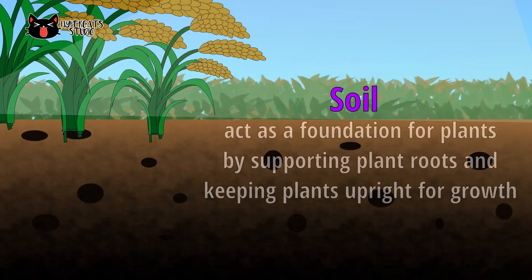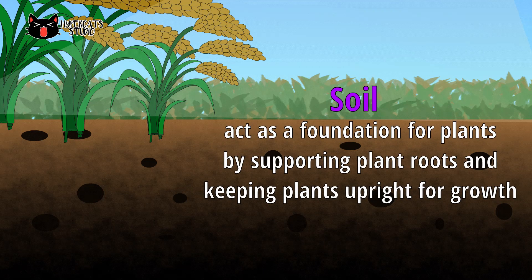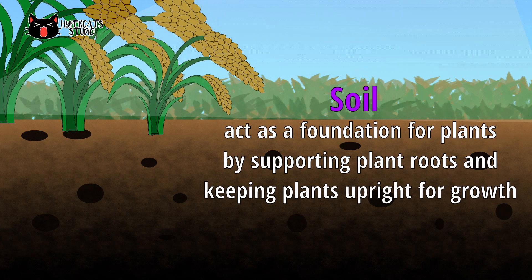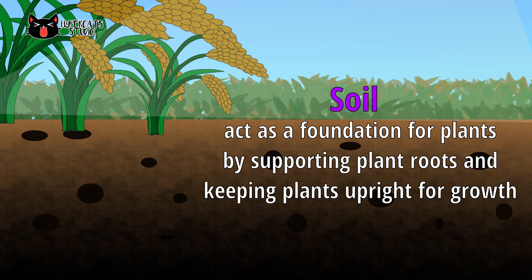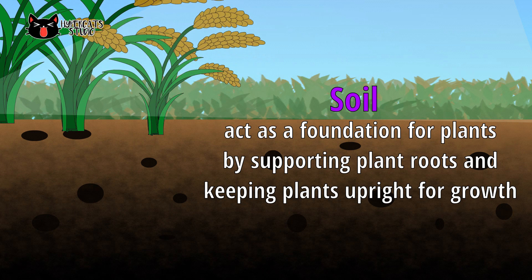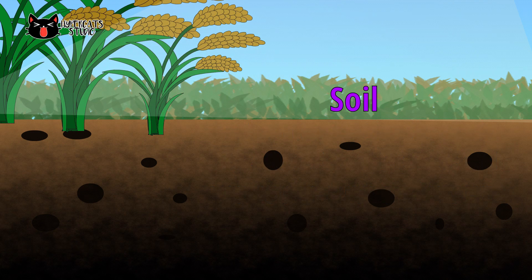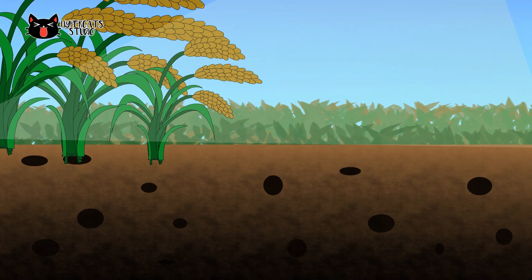Soil acts as a foundation for plants by supporting plant roots and keeping plants upright for growth. It contains air, water and minerals that are used by plants to make their own food. Soil is the backbone of our food security. Without it, farmers will not be able to grow the plants that we eat.